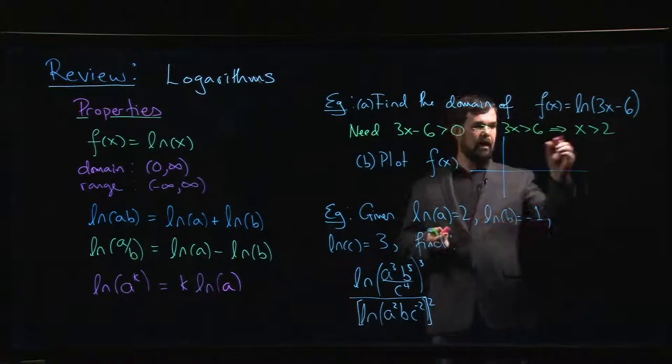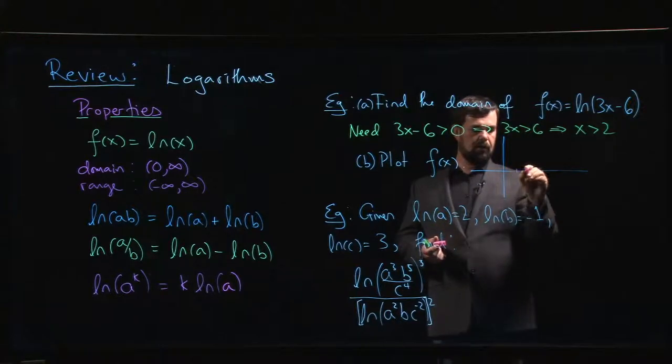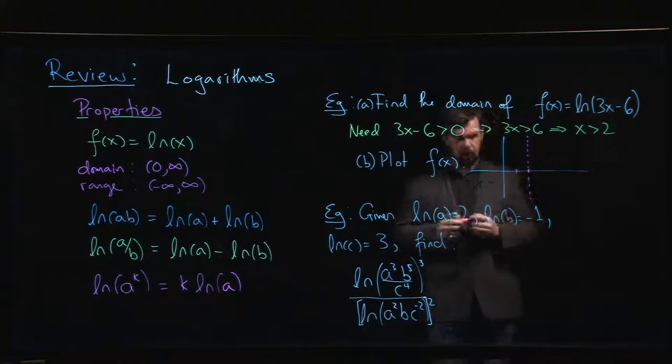Now at 2, right? So there's a vertical asymptote where the domain begins. Essentially, we've shifted it over. One way to think about it is this is 3 times x minus 2 if you factor out the 3.